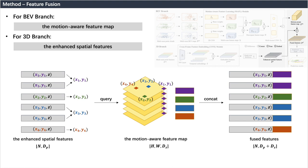For the BEV branch, we get the motion-aware feature map, and for the 3D branch, we get the enhanced spatial features. For each point feature in the enhanced spatial features, we find the corresponding feature in the motion-aware feature map according to its position on the plane in the physical space, and perform the connection operation to obtain the final fused features.